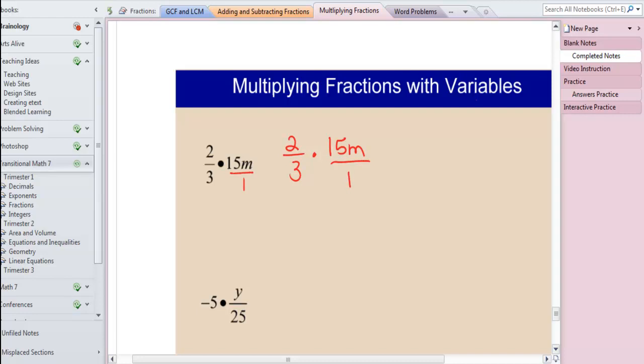So you need to understand that 15m is actually in the numerator over 1. So now I can cross-cancel. 3 will go into 15 five times. And that's all we can cross-cancel. Now we can multiply numerators and denominators. 2 times 5 is 10 times m is 10m. And in the denominator we have a 1, so our answer is just 10m.